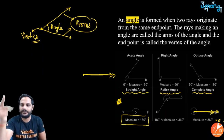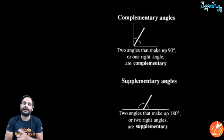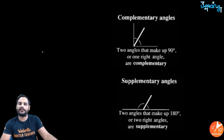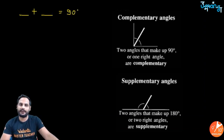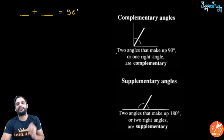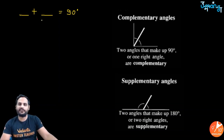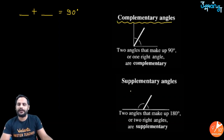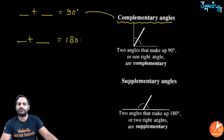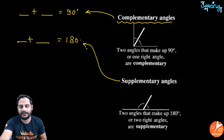After types of angles come complementary and supplementary angles. Complementary angles are two angles whose sum is always 90°. Supplementary angles are two angles whose sum is always 180°.